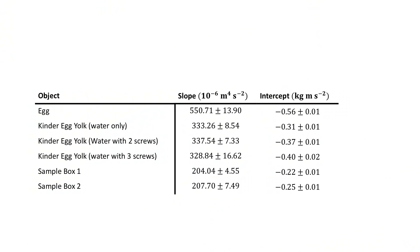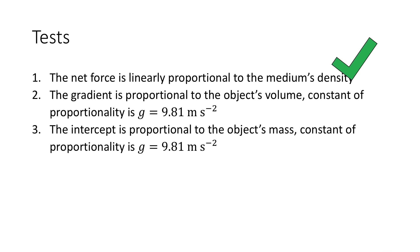Now qualitatively this looks good. The net force is proportional to the medium's density, but to be absolutely sure we must look at the fitting parameters. In this table, the first column shows which object was tested, the second column shows the slope, and the third column shows the intercept. Indeed we see that the slope is larger than the uncertainty, and given that for each object the medium's density was the only thing that changed, the net force is proportional to the medium's density.